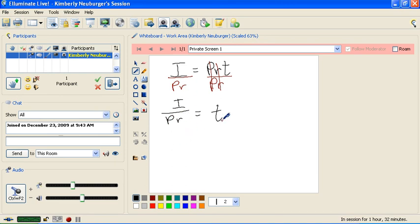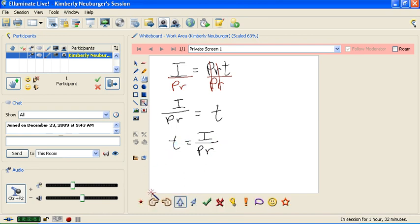And our new formula, if we like to have the t on the left-hand side, is that the time that the money was in there is going to be the interest divided by the principal times the rate. And this form here of that same formula may be more beneficial depending on what your problem-solving situation is.